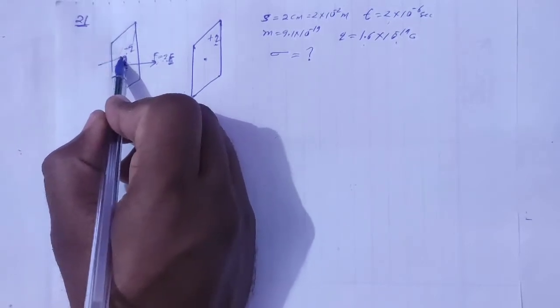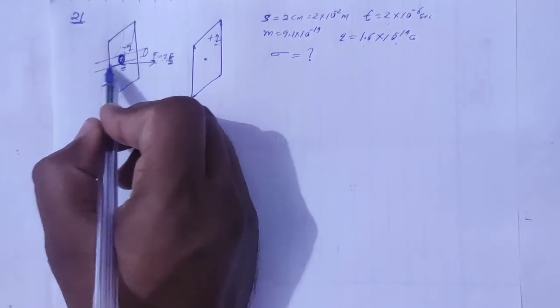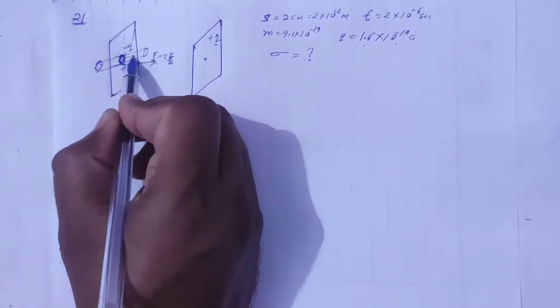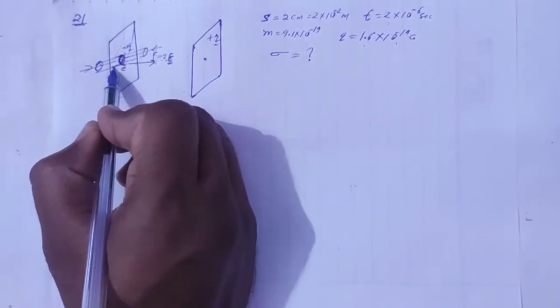Gaussian surface create karo yahan pe, toh mahenne yahan pe Gaussian surface banay, cylindrical cylinder. Yeh maan do, yahan pe electric field. Agar yeh negative hai, toh electric field is traf, yahan pe electric field is traf, right. Dekho electric field is circle ke along hai, right.